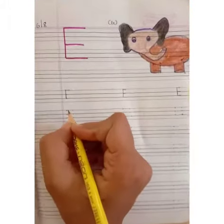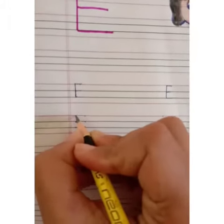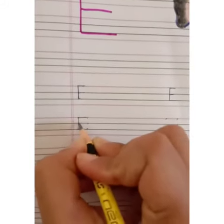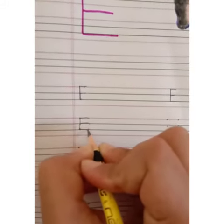So now we will write E in three lines. So first standing line, then one sleeping line, two sleeping line and three sleeping line. E.